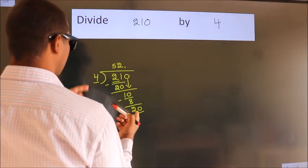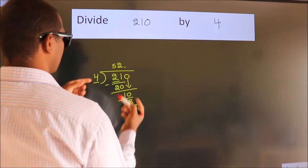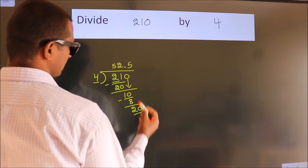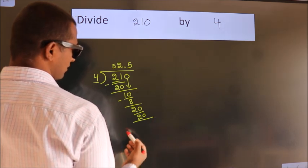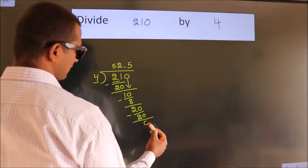When do we get 20 in the 4 table? 4 fives 20. Now we subtract. We get 0.